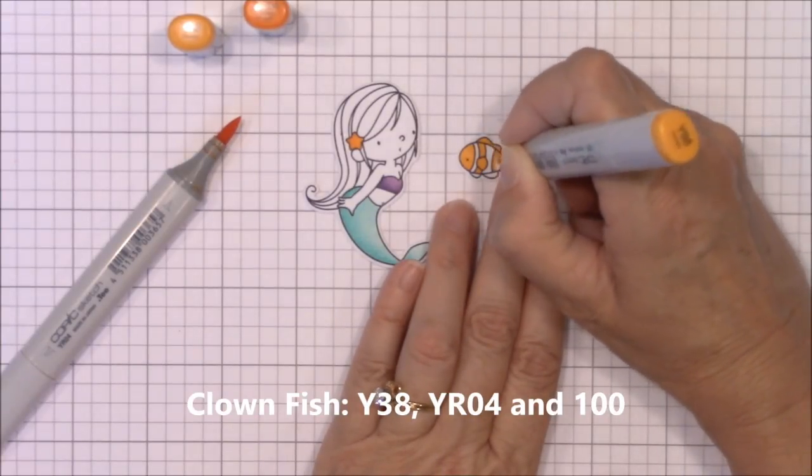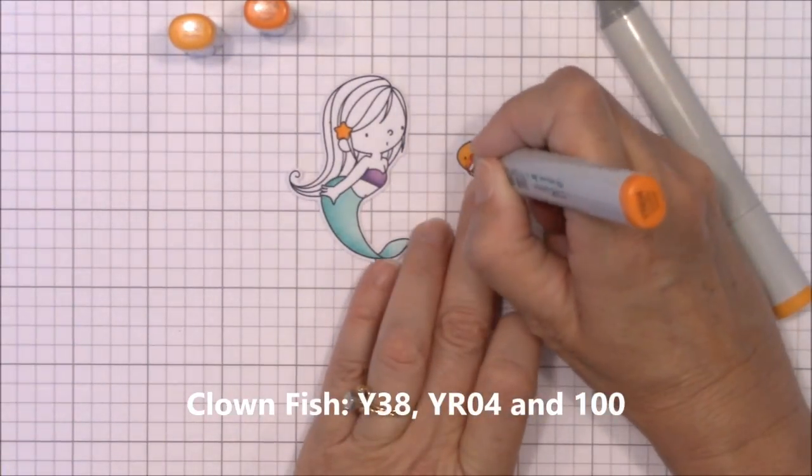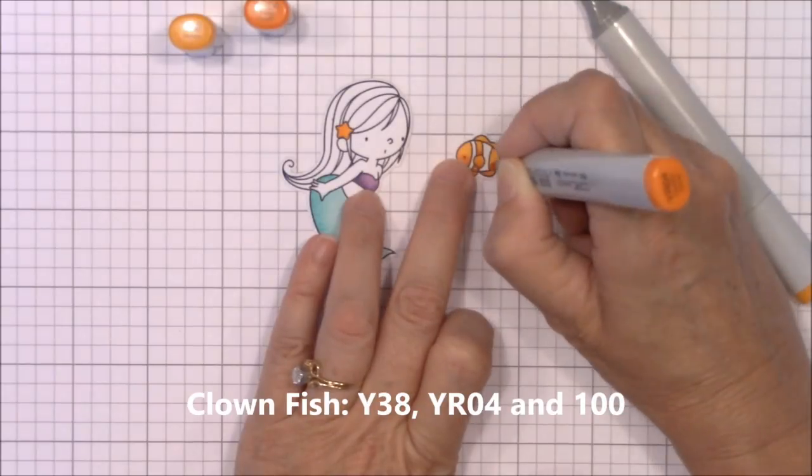And oops my camera was off when I colored the mermaid's hair. I used Y21, E44, E39, and E59.